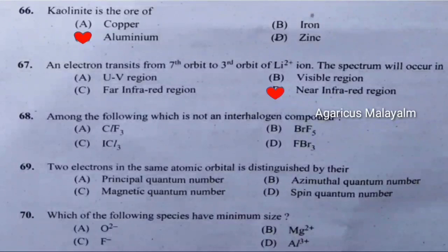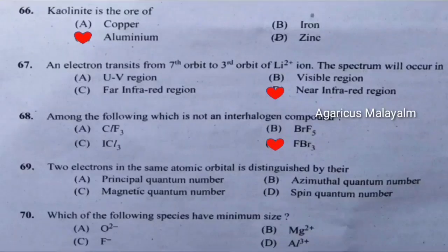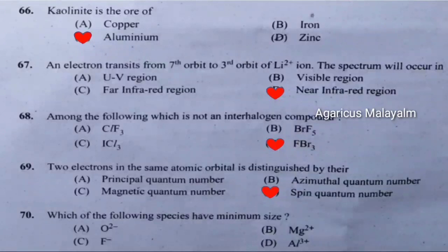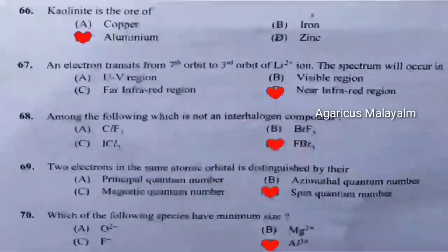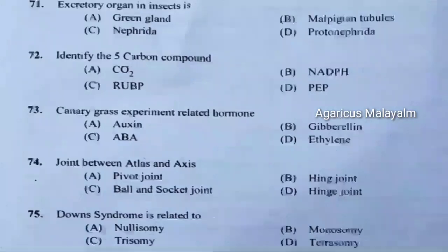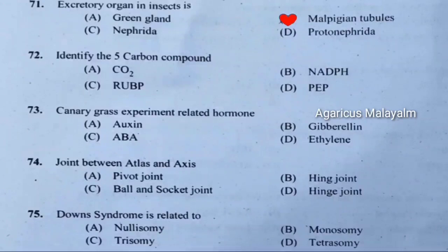Sixty-eighth question: Among the following, which is not an interhalogen compound. Correct answer is option D — FBr3. Sixty-ninth question: The two electrons in the same atomic orbital are distinguished by. Correct answer is option D — spin quantum number. Seventieth question: Which of the following species has the minimum size? Correct answer is option D — aluminium. Seventy-first question: Excretory organ in insects. Correct answer is option B — Malpighian tubules.